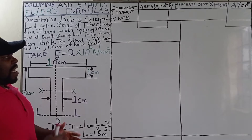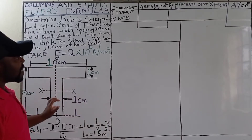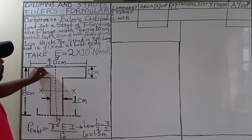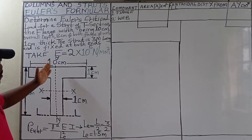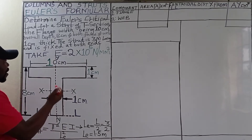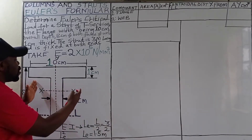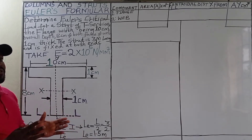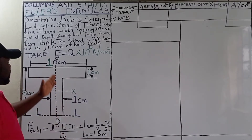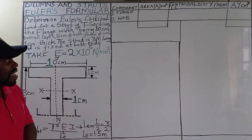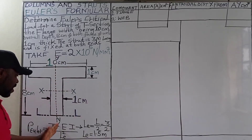We are going to determine the position of the neutral axis on this T-section of the strut. This T-section is symmetrical about the YY axis, meaning when you cut this section along the YY axis you get two equal halves. Because it is symmetrical and balanced along the YY axis, the center of gravity of this section will lie along the YY axis.